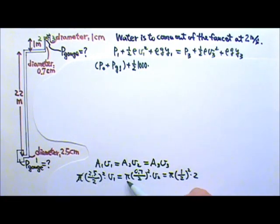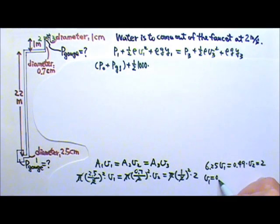The pi's can cancel, all of the 1 half squared can cancel. So this part over here will give me 2.5 squared, 6.25 times V1 equals 0.7 squared, that's 0.49 times V2, and that equals to 1 times 2, that equals to 2. This will give us V1 to be 0.32 m per second and V2 is 4.08 m per second.